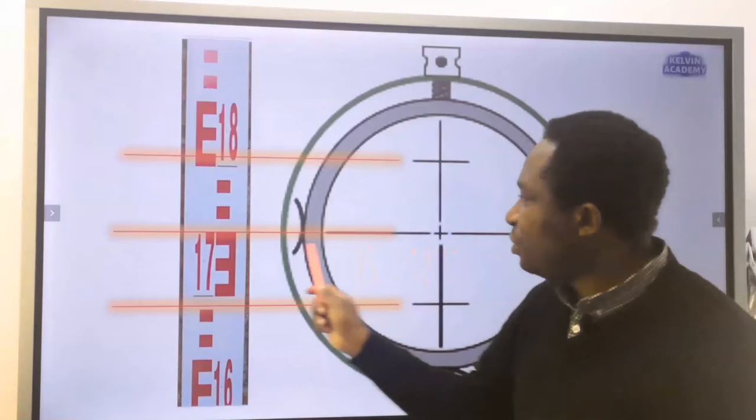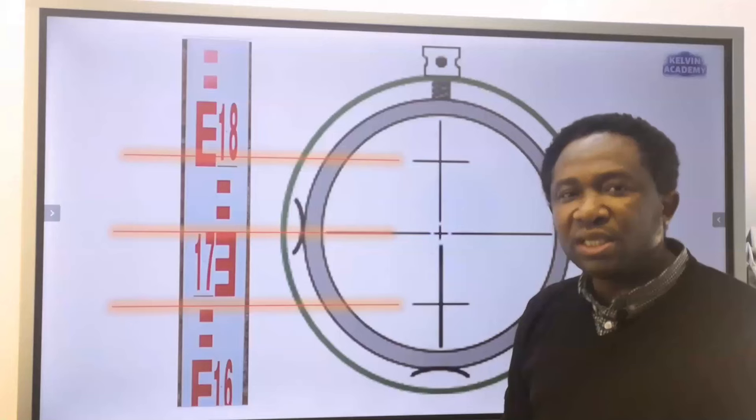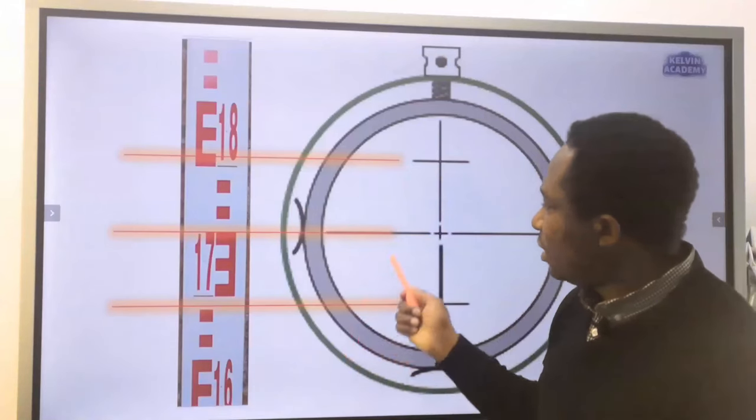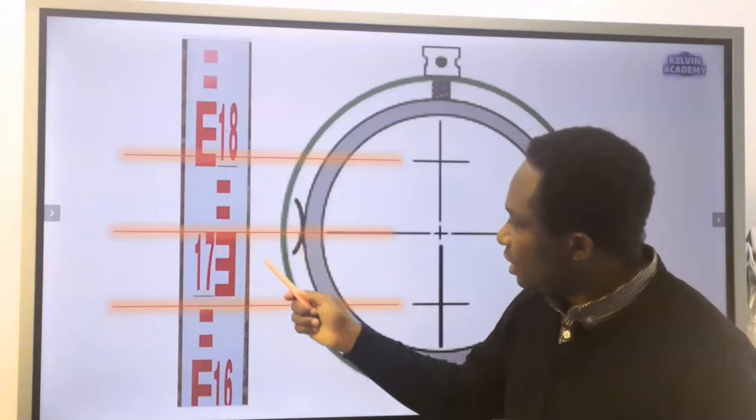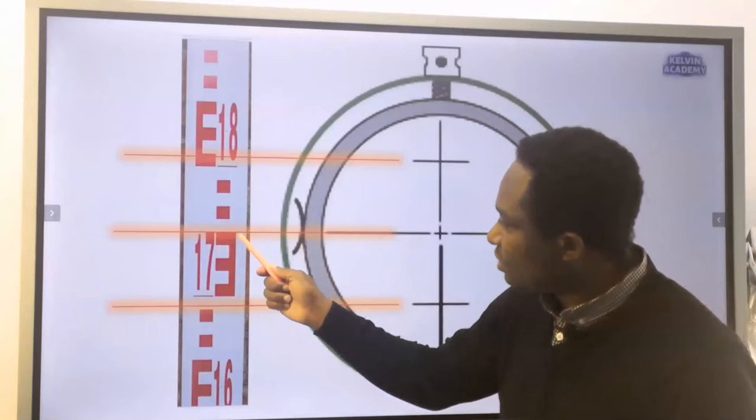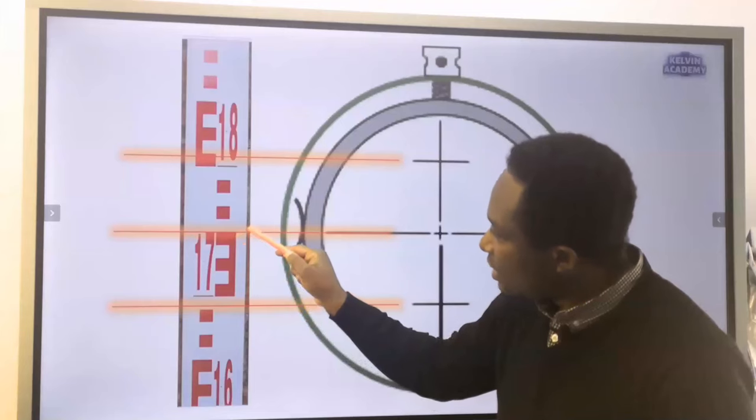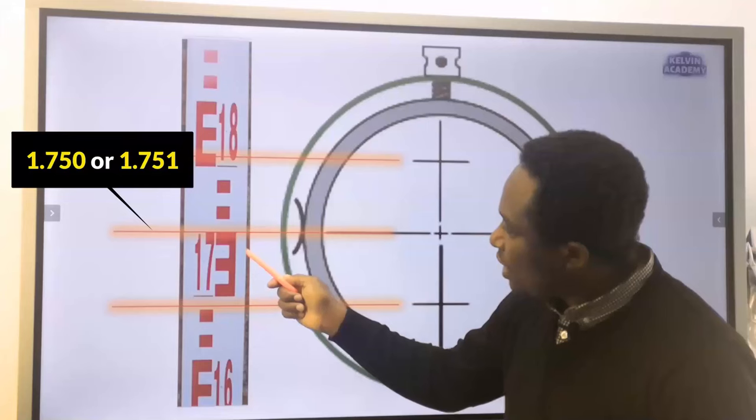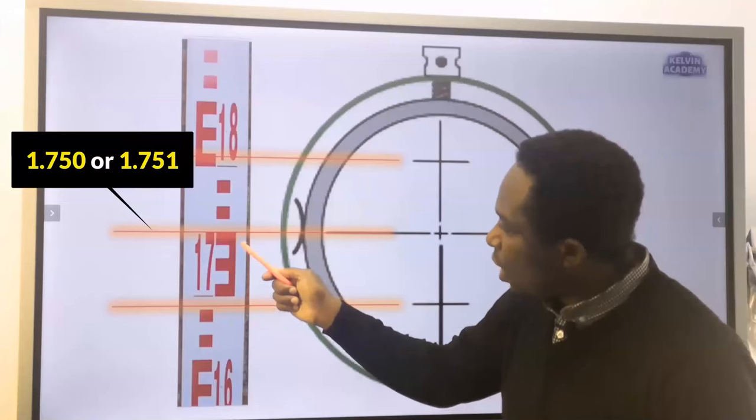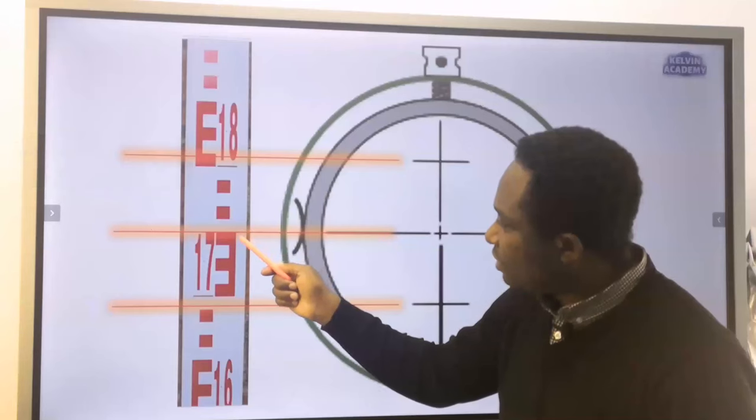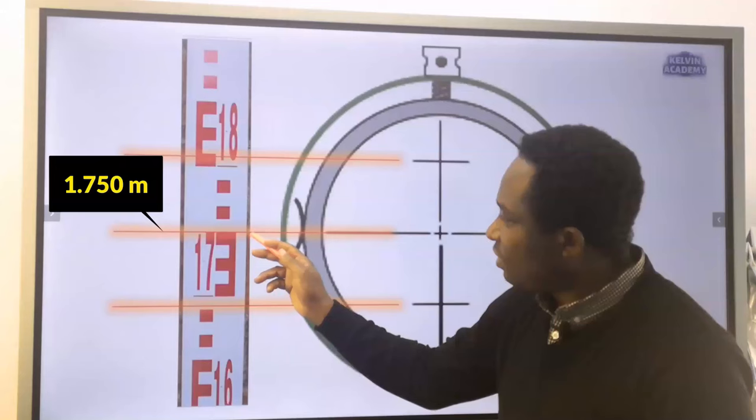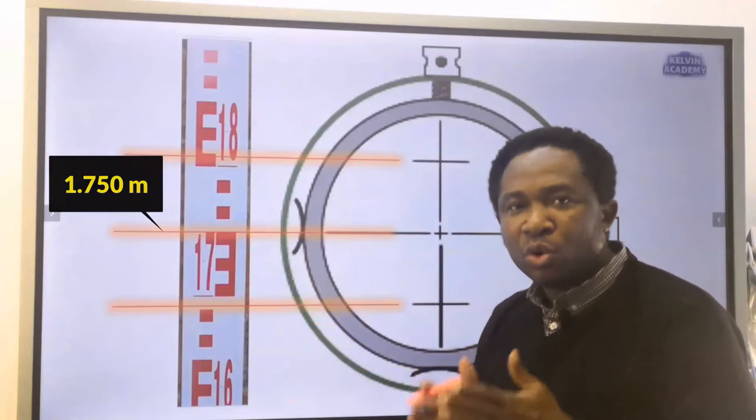And for the middle cross hair, we don't need it for distance measurement. However, if you observe the reading, this is 1.750 and it is a bit at the top of the E. So one can read this as 1.750 or 1.751. 1.750 will be more accurate.